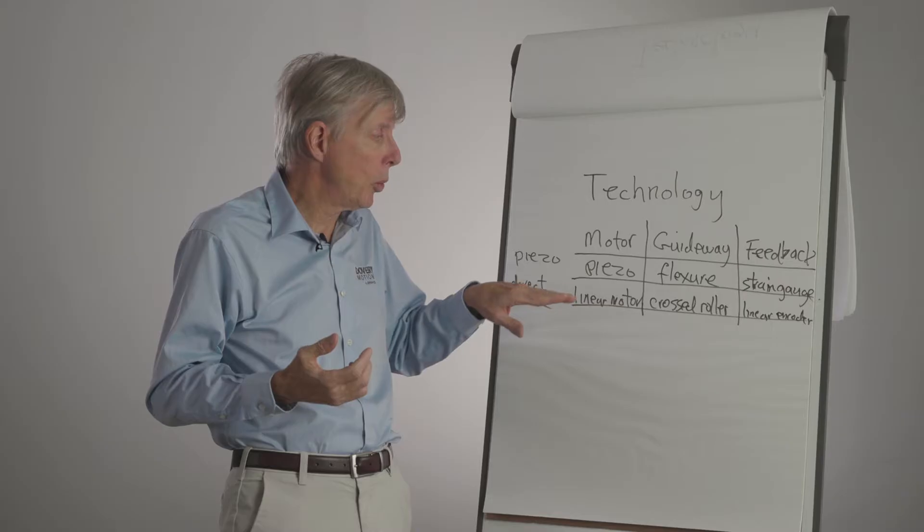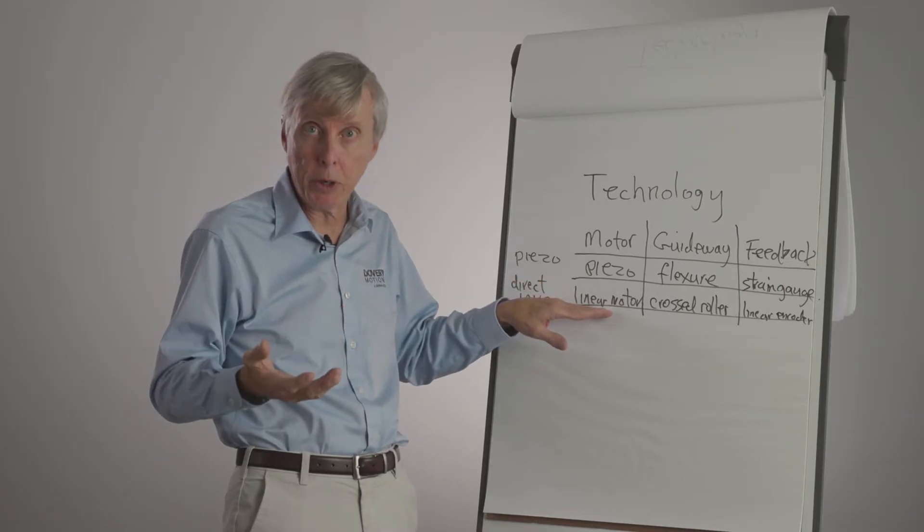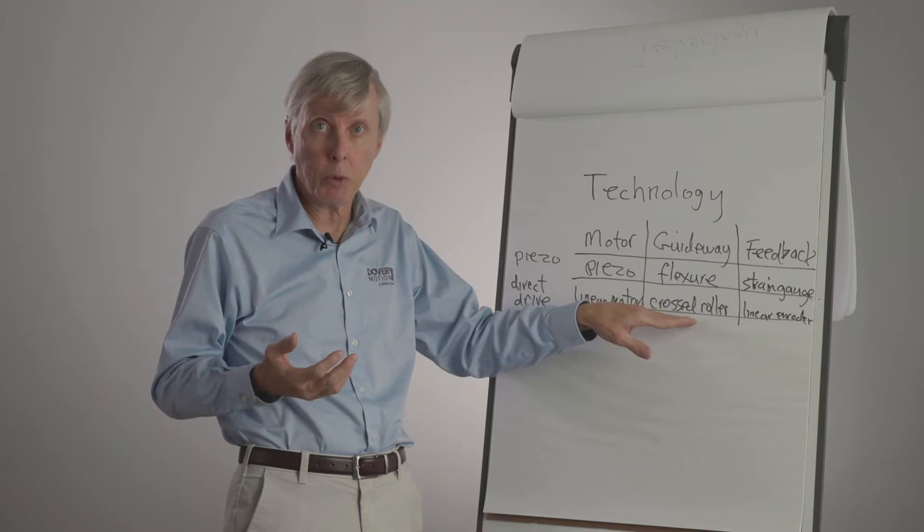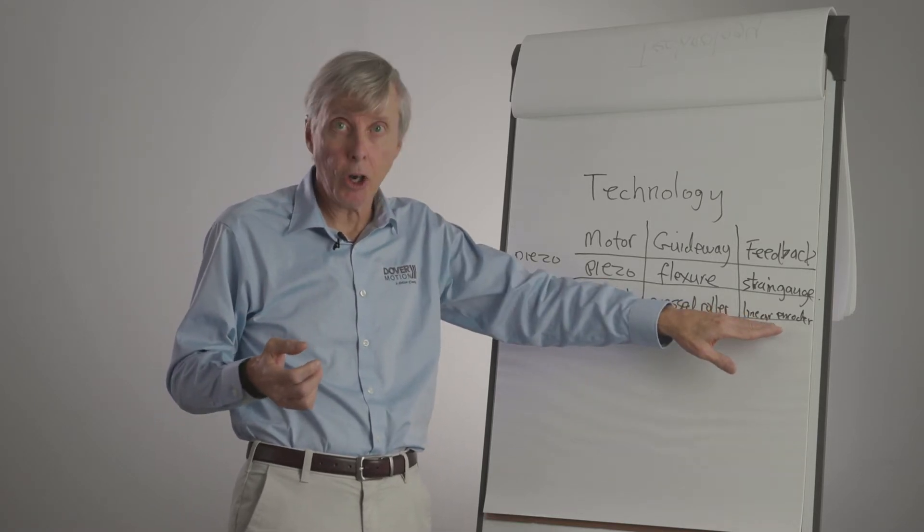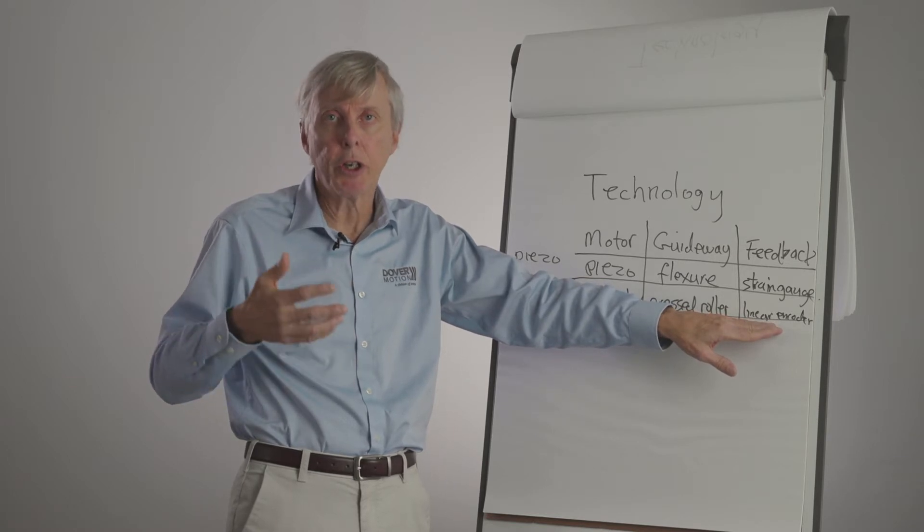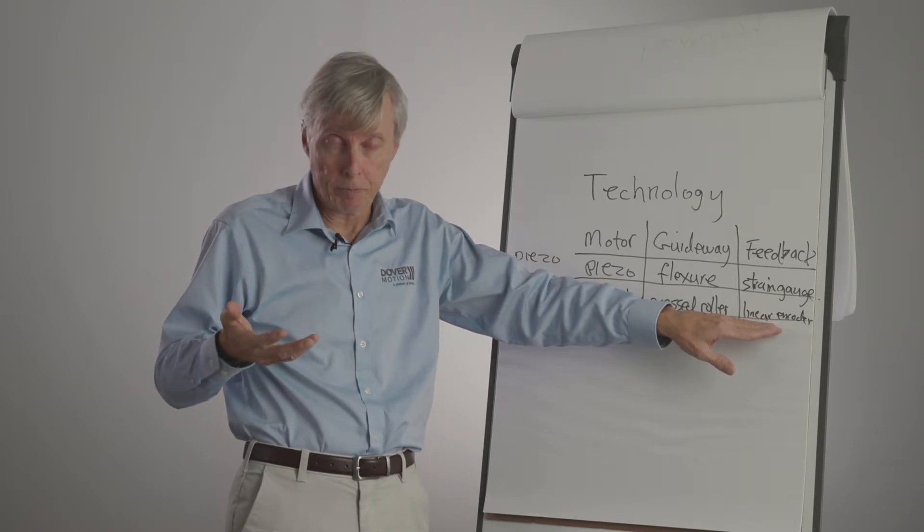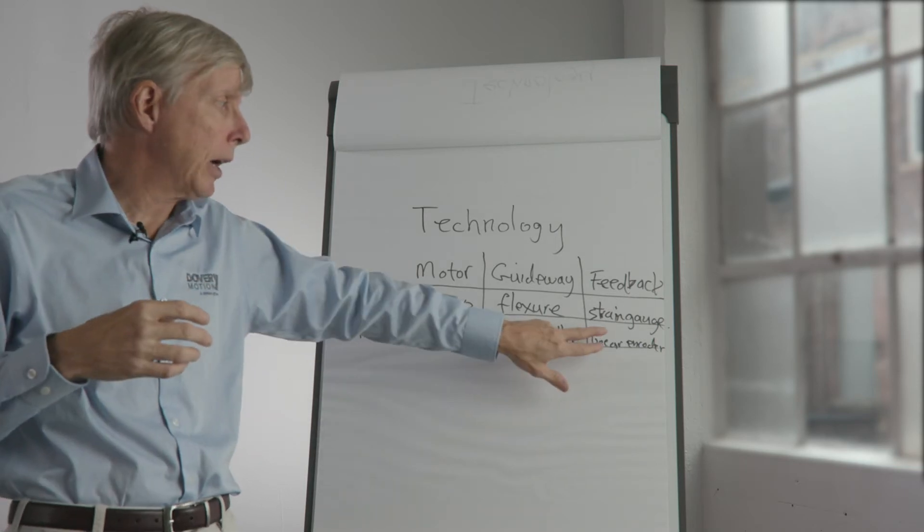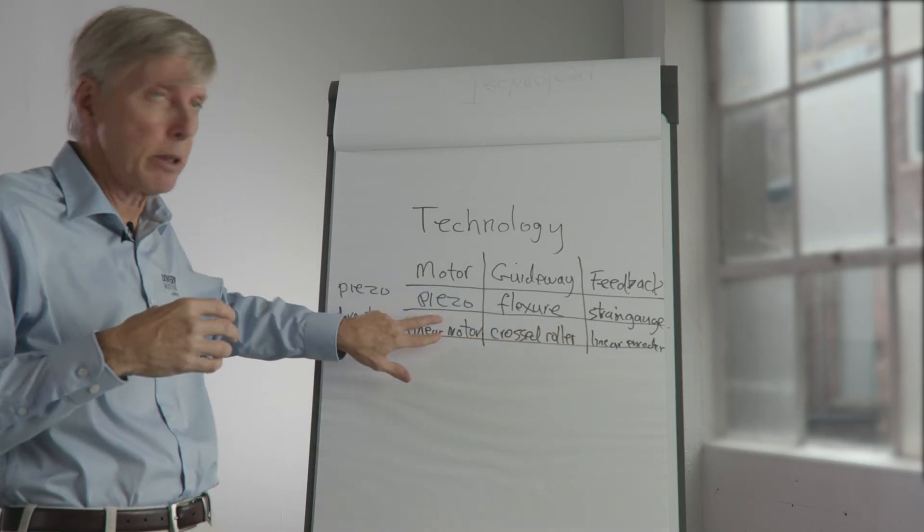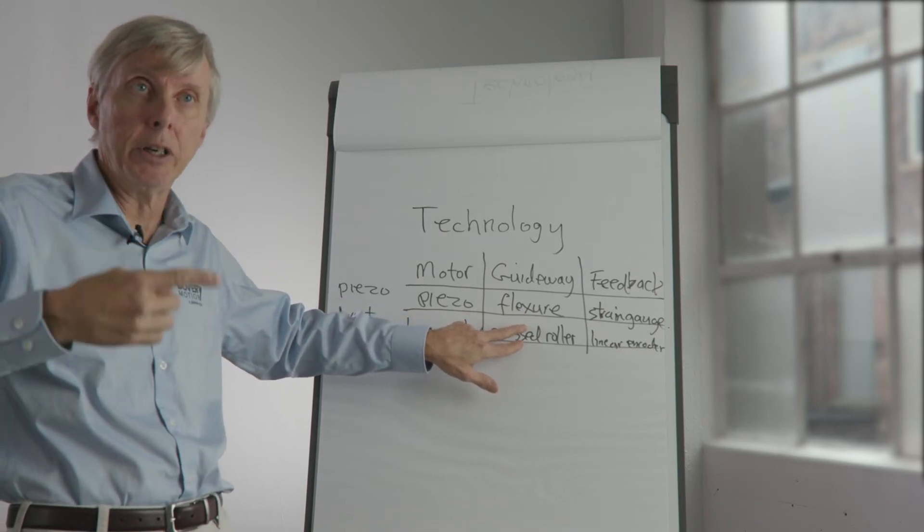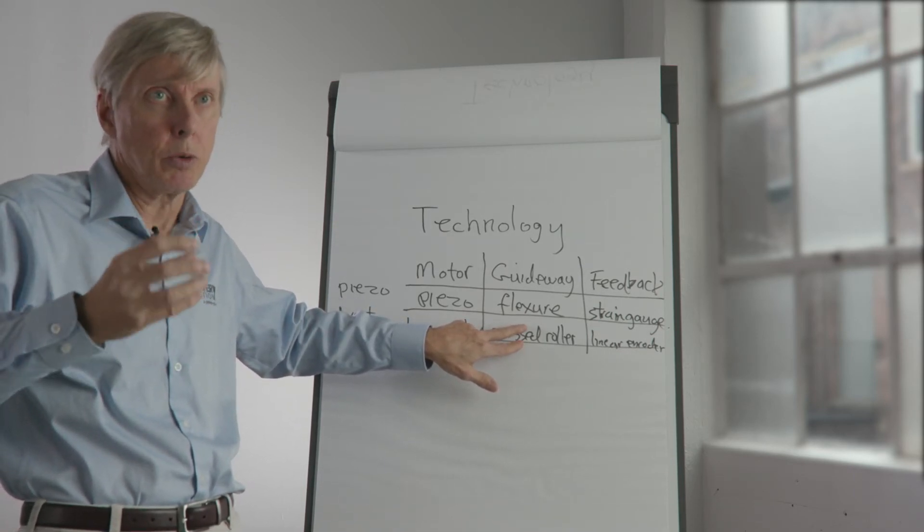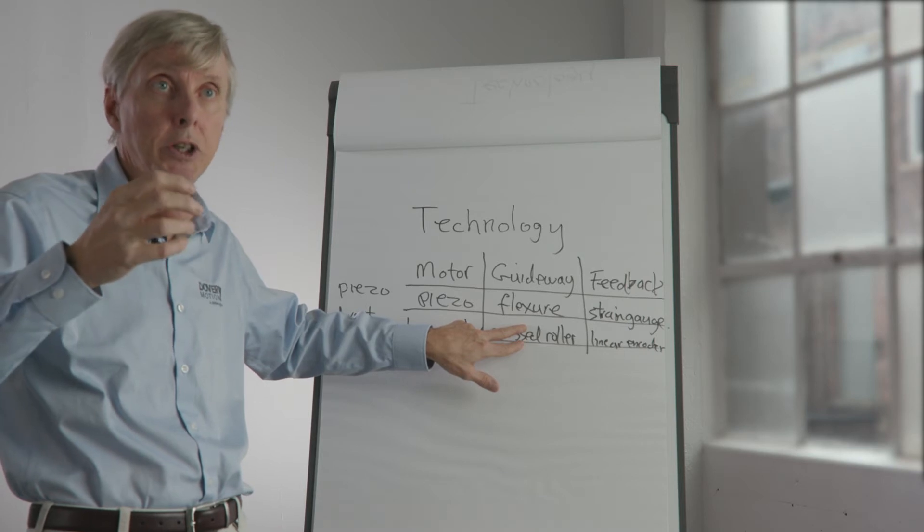When we do direct drive, we have a linear motor with unlimited travel, cross roller guideways, very stiff, unlimited travel, and a linear encoder, very accurate, very high resolution, and unlimited travel. This is a very pure system. The optical encoder has no contact, the linear motor has no contact, and the rolling motion of the cylinders in the cross roller are extremely stiff and extremely smooth and straight.